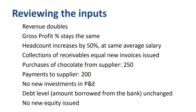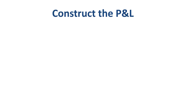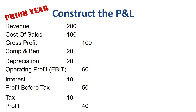In order to translate these inputs into numbers, let's construct a year 2 income statement, and then we will select the relevant items from there to help build the cash flow statement. On the left is the prior year — year 1 — income statement, and each of the inputs from the prior page helps you construct the current year — year 2 — income statement on the right.